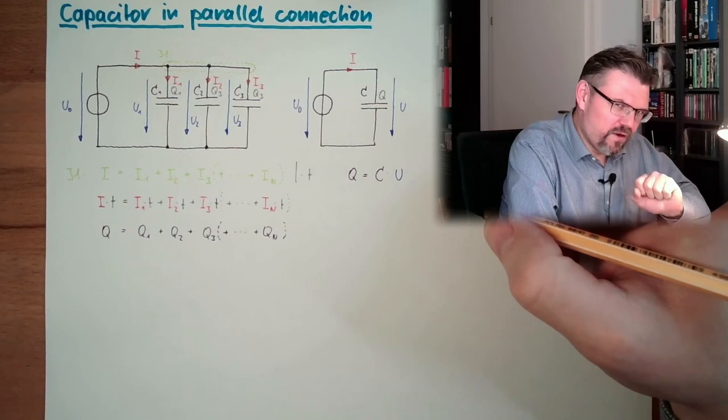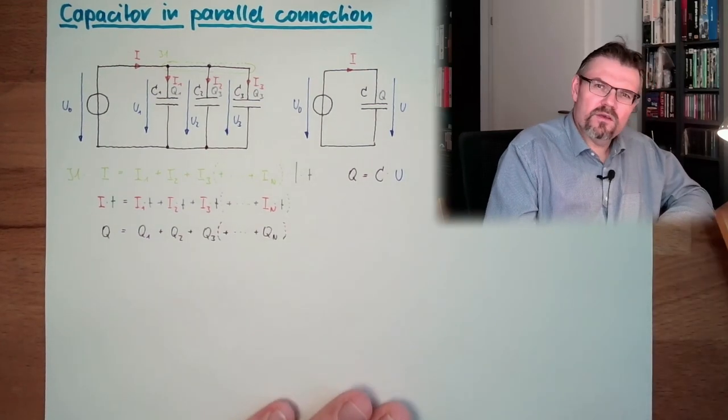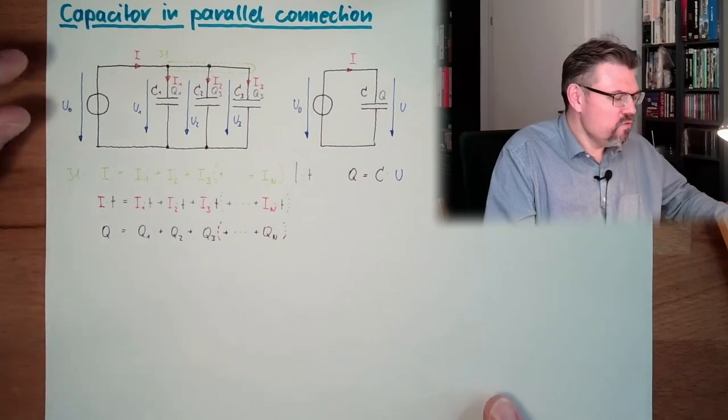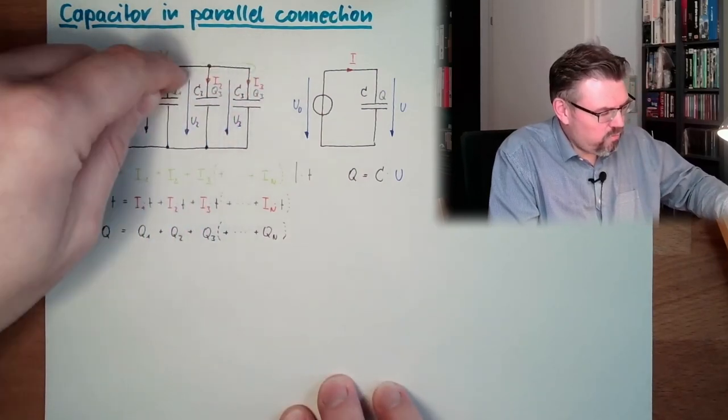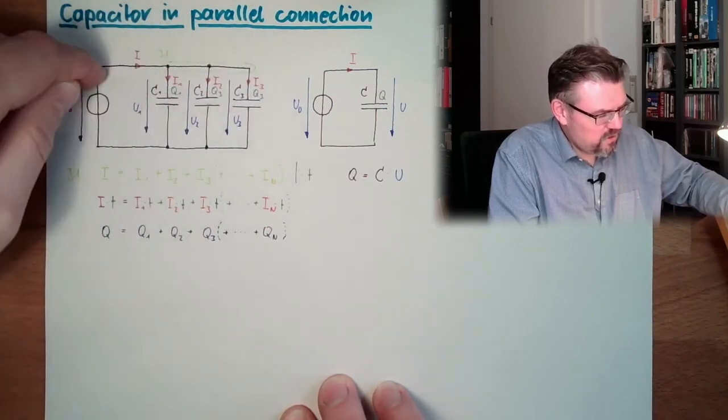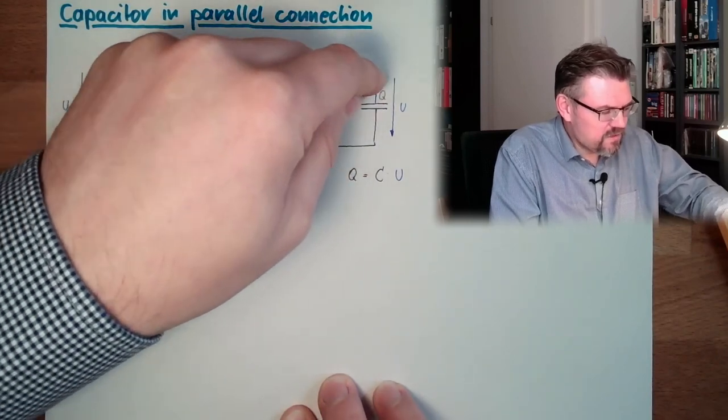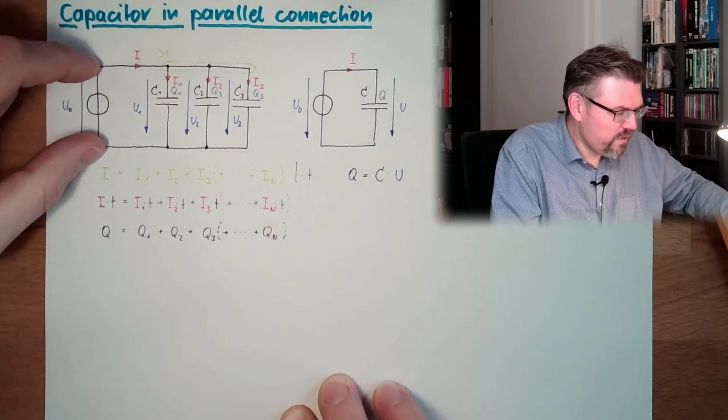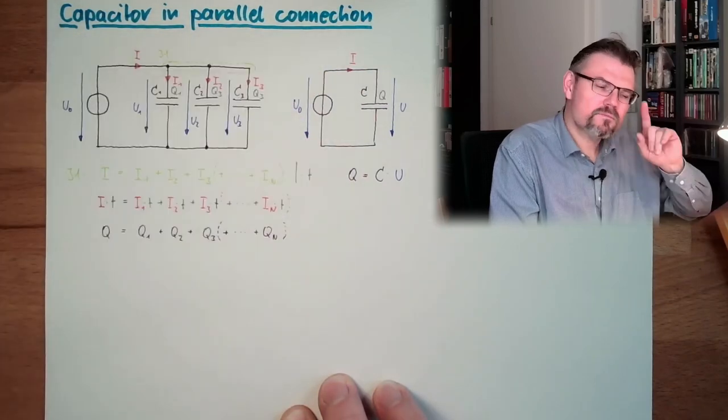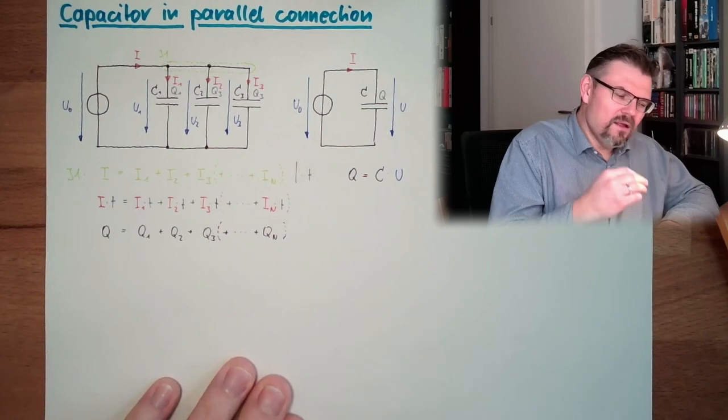U is a potential difference. And we already had this when we made a parallel circuit for resistors. U is a potential difference. Here, this whole thing here has one potential. And this whole thing here has the second potential. And here, this is the same potential than this one, and this is the same potential than this one. Because in between, we have the same difference in potential.